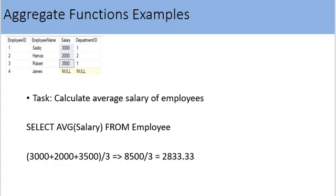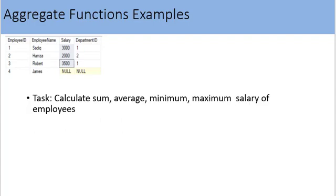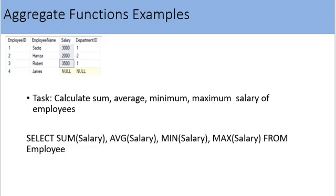Please note this query is computing the average based on only three rows — the fourth row is excluded because it contains NULL in the salary column. We can use more than one aggregate function in a single query. For example, to calculate sum, average, minimum, and maximum of salary: SELECT SUM(salary), AVG(salary), MIN(salary), MAX(salary) FROM employee.